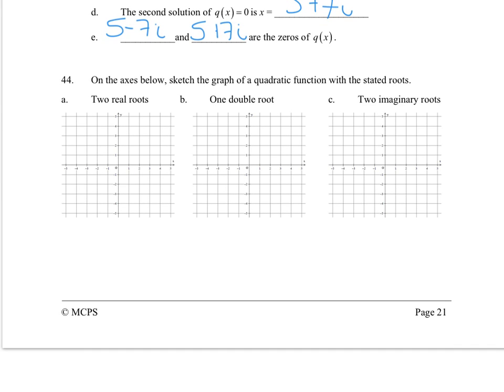Two real roots means two x-intercepts. I'll pick one here at -3, one here at 3. One double root means an x-intercept as the vertex. And two imaginary roots means no x-intercepts. So there are some examples.